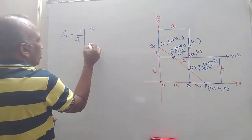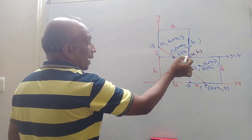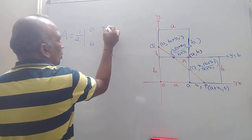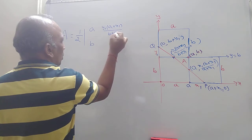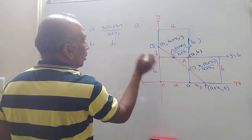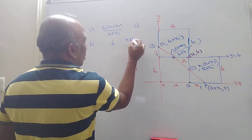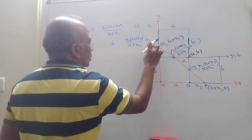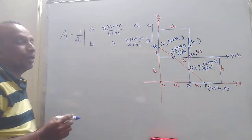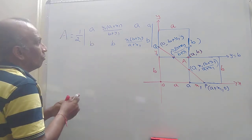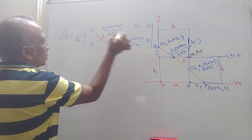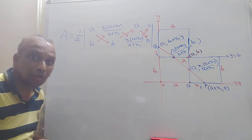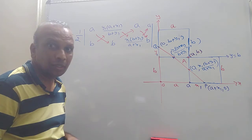The coordinates are: first point A comma B, second point A comma X1(B+Y1)/(A+X1), and third point Y1(A+X1)/(B+Y1) comma B. I can find the area using the cross multiplication method. I am going to simplify the entire equation now, and if I simplify, I will get the required triangle area.